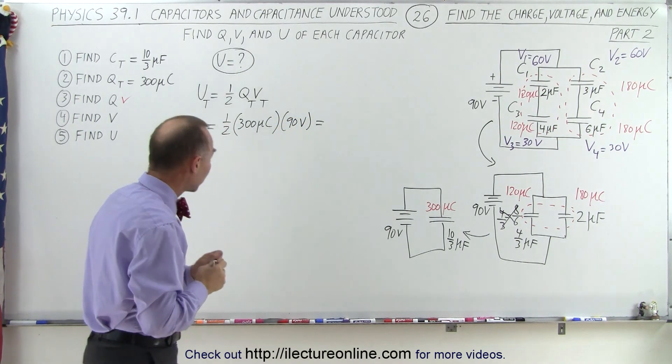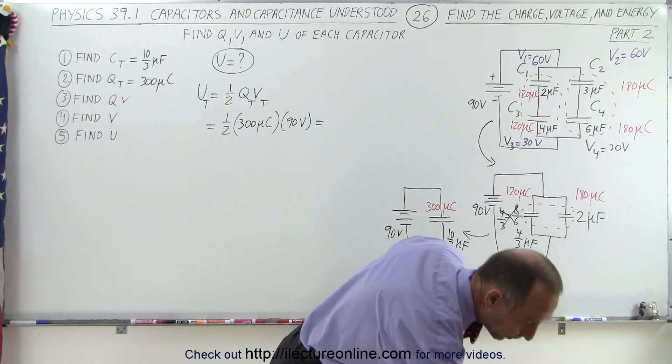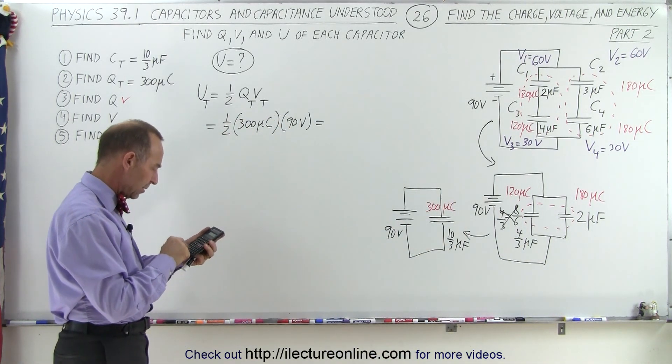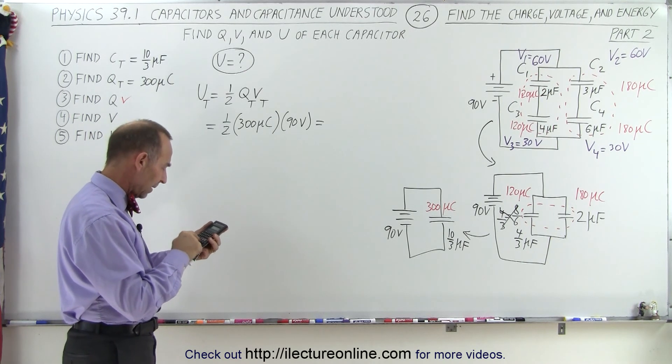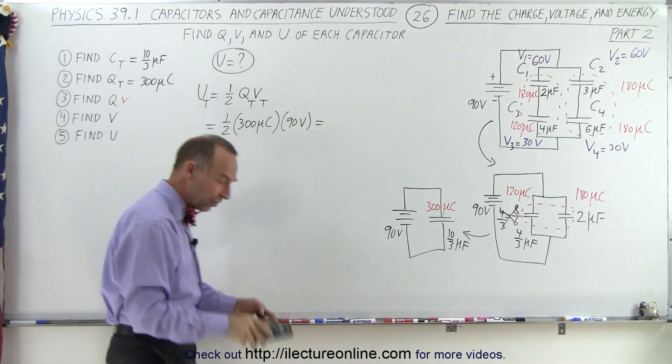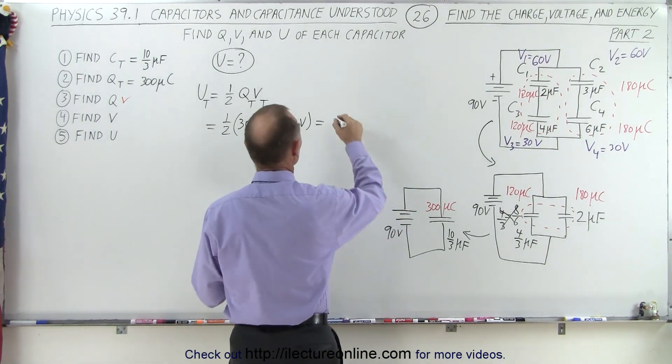Coulombs times voltage gives us joules. And 300 times 10^-6 times 0.5 times 90 equals 0.0135 joules.